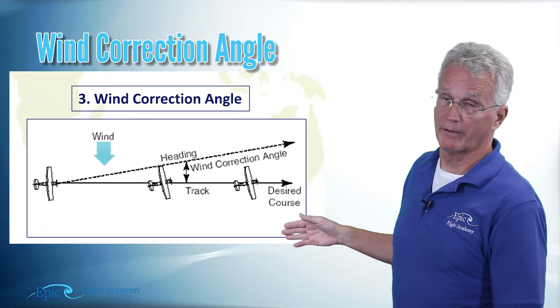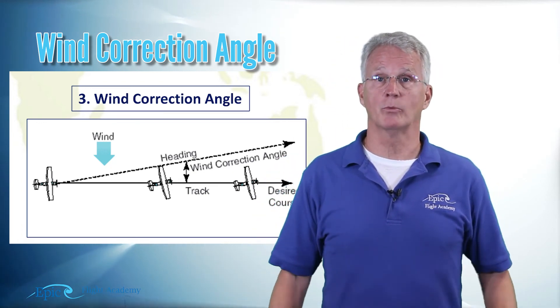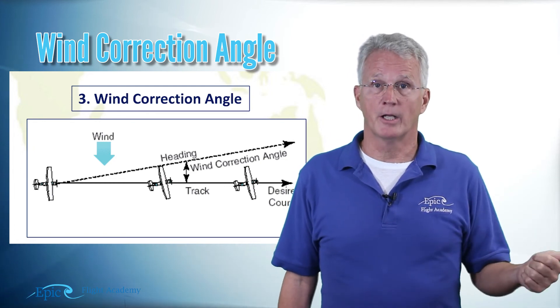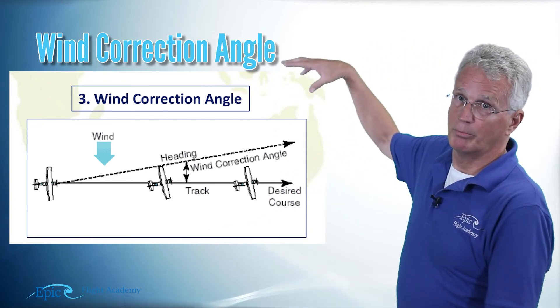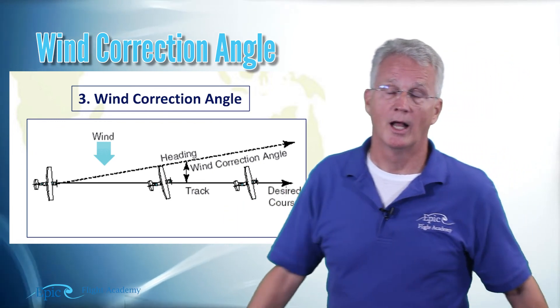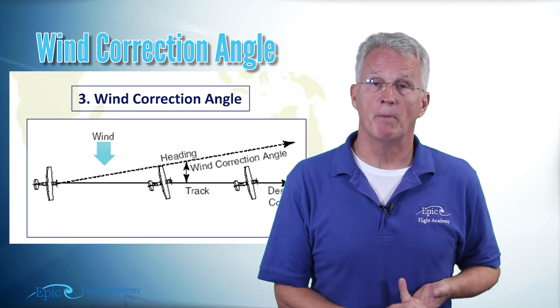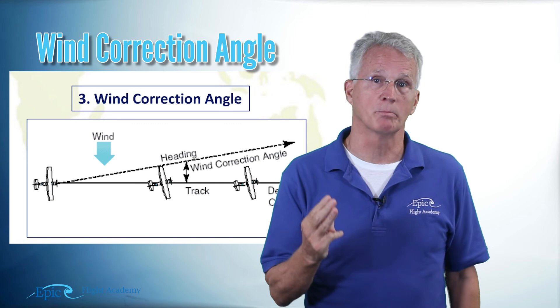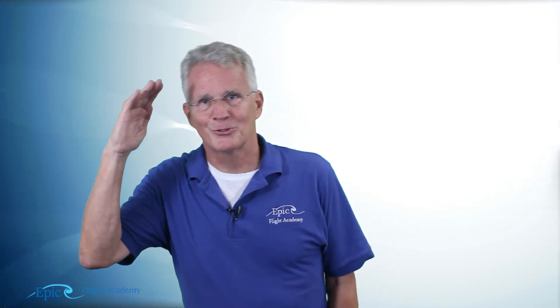So that is an overview on the measurement of direction and the three things it is important that we account for. What are those three things? If you said variation, deviation, and wind correction — you're correct. Well folks, that's a little bit about the measurement of direction. We'll see you next time.